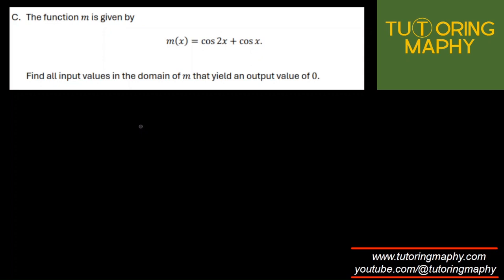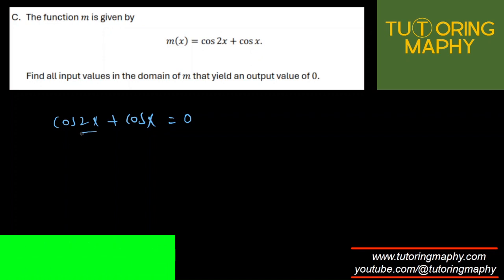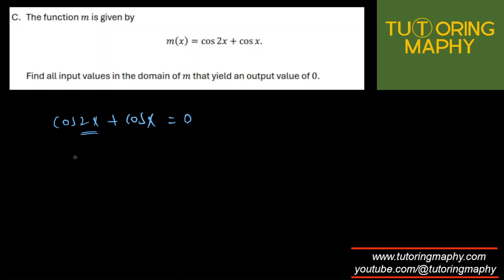Alright, excellent. Last part, part C remaining. Okay, the function m is given by m(x) = cos 2x + cos x. Find all the input values in the domain of m that yield an output value of 0. Okay, output value is 0. What is the output value? Obviously, the value of m. So this is a simple question of solving a trig equation cos 2x + cos x = 0. So the output is 0. Well, cos 2x, ring any bells? Double angle identities because this is twice of the angle. Cos 2x definitely has three double angle identities. But I'm interested in the one which only gives me in terms of cos so that I don't really want to introduce another trig function over here.